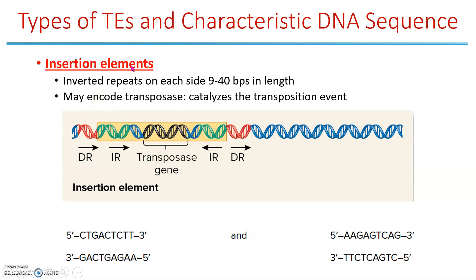The first type is the insertion element. Insertion elements have those direct repeats, but they also have inverted repeats on each side — depending on the organism, these can be 9 to 40 base pairs. The inverted repeats are like a mirror image on the opposite side, for example C-T-G on one end and C-A-G on the other. Insertion elements typically encode transposase, which they need to excise and move.